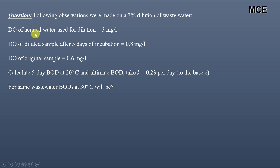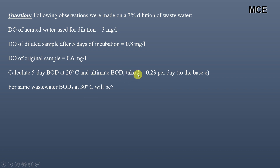Dissolved oxygen (DO) of aerated water used for dilution is 3 mg per litre. DO of the diluted sample after 5 days of incubation is 0.8 mg per litre. DO of the original sample is 0.6 mg per litre. We have to calculate the 5-day BOD at 20 degrees centigrade, the ultimate BOD taking rate constant K as 0.23 per day on base E, and also find BOD5 at 30 degrees centigrade for the same wastewater.